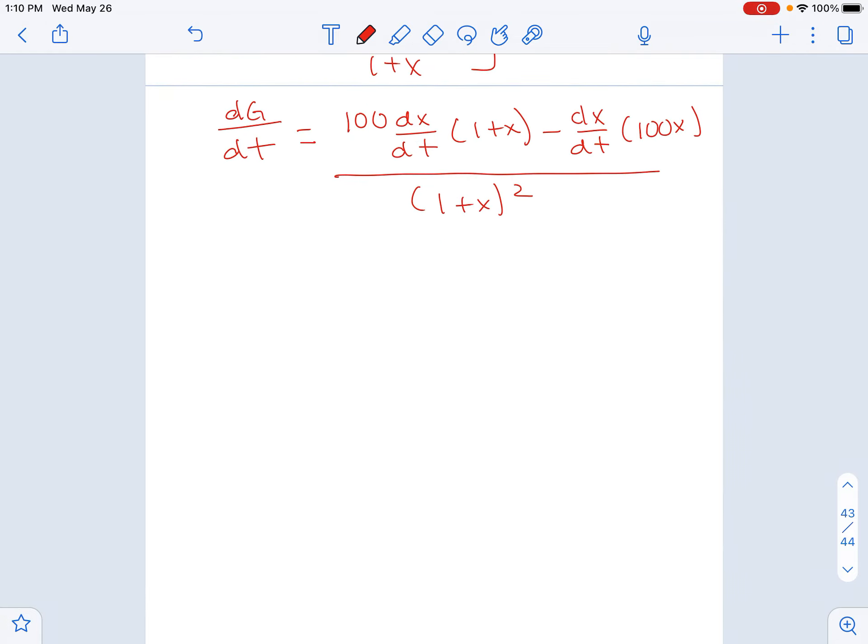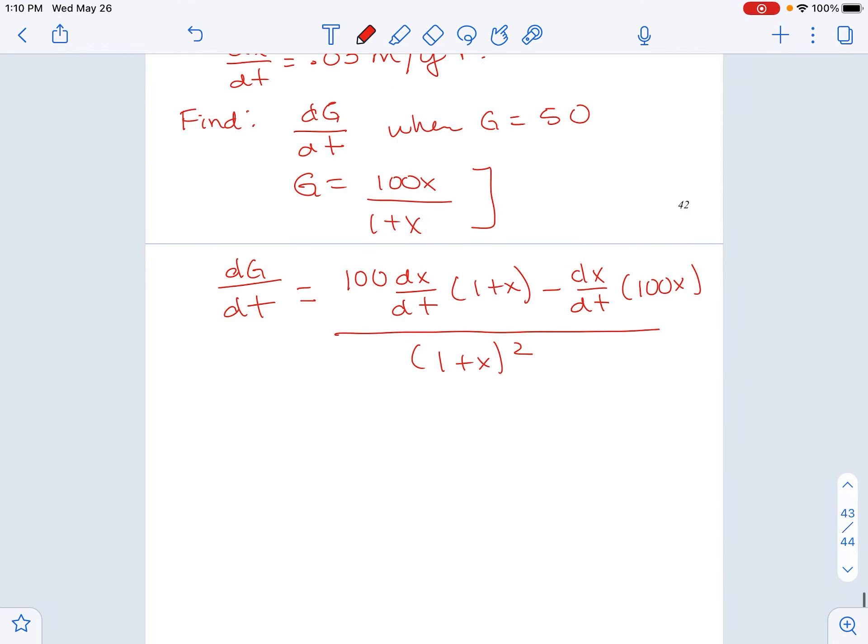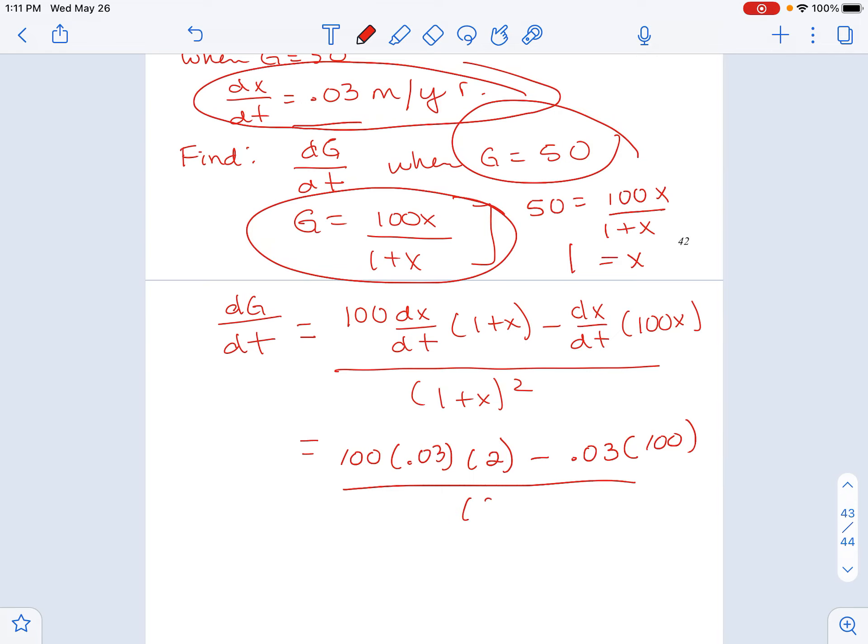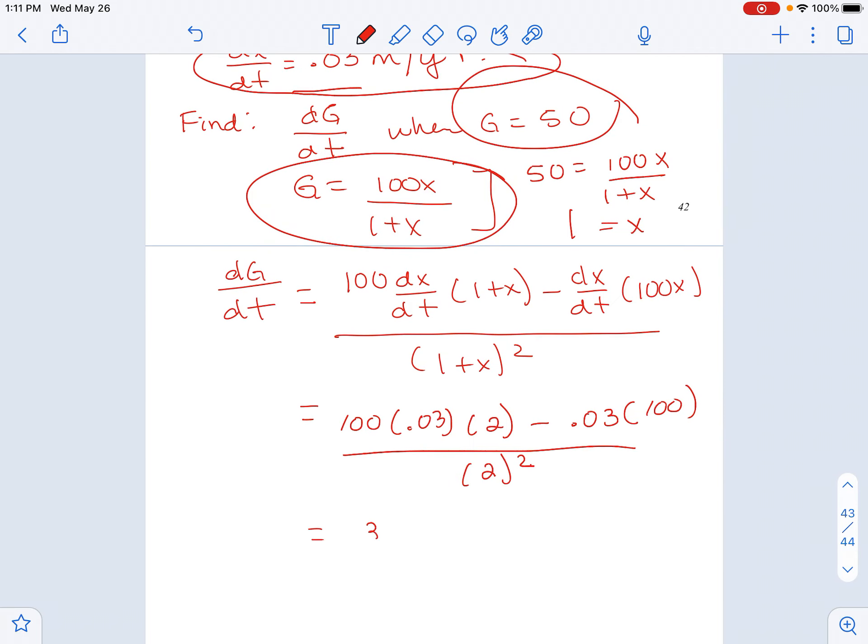Now let's see what pieces we can plug in. We do have dx dt. It was given to us that it is 0.03. The only thing that we're missing is x. They told us that dx dt is 0.03. I want to know when g is equal to 50. I don't know what the x is, but I know g has to be 50. So we can figure out the corresponding x when g is 50. So if I solve this, you end up with x is exactly equal to 1. You can cross multiply, do some algebraic stuff. So if I plug in all my pieces, this is 0.03, x is 1, so this is 2, dx dt is 0.03, this will just stay 100, and then this will be 2 squared. And if you simplify this out, this all becomes 3 fourths. So this is the change in the height of the tree, so it's 3 fourths meters per year.